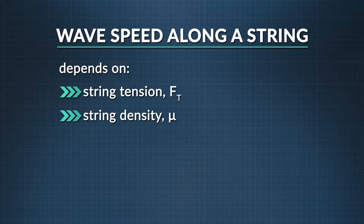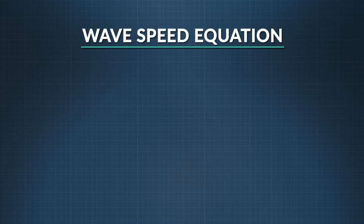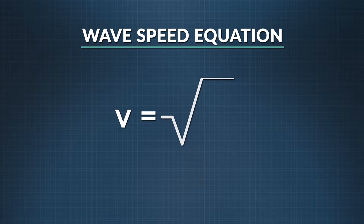The exact relationship of wave speed or velocity is found with this equation. Velocity equals the square root of the string density, f sub t divided by mu. To find the wave speed on the string, we could measure the string tension and its density.